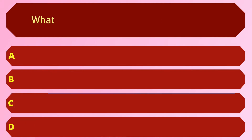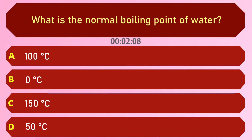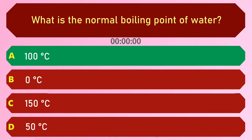What is the normal boiling point of water? Options are: A) 100 degrees Celsius, B) 0 degrees Celsius, C) 150 degrees Celsius, and D) 50 degrees Celsius. The answer is option A, 100 degrees Celsius.